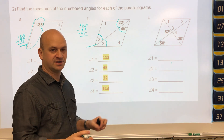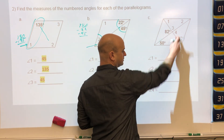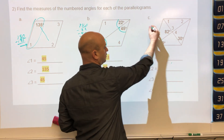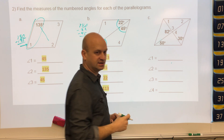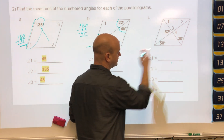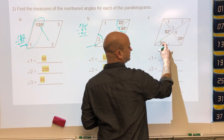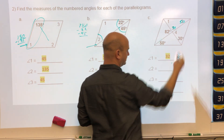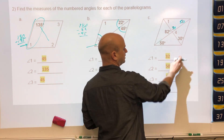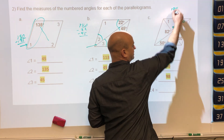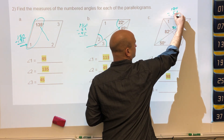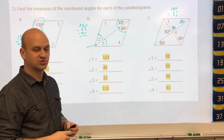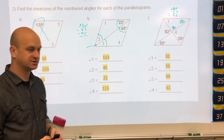This is a parallelogram, not a rhombus. Angle 4 is a vertical angle, so it equals 82. Angle 3 is a linear pair with angle 4, so 180 minus 82 gives angle 3. Using alternate interior angles with 50 and 98, angle 1 equals 180 minus 50 minus 98, giving 32 degrees. That covers the shape, part, and property for diagonals of a parallelogram.